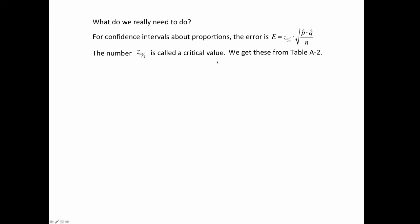That was a beautiful overview, but what is it that we really need to do? So the error. The error when you're talking about proportions is going to be, here's the z value, which we're going to get from table A2. This is the sample proportion, p hat, and q is always equal to 1 minus p. So these z's are called critical values. Like I said, we get those from table A2.